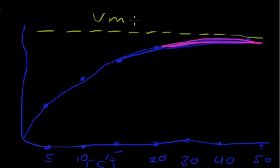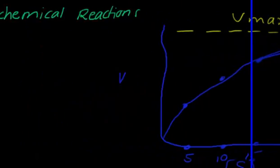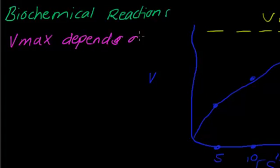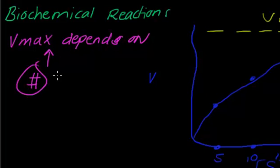Vmax is the maximum rate possible to achieve within a given amount of enzymes. Vmax depends on the number of enzymes. The only way to increase the Vmax is by increasing the number of enzymes.